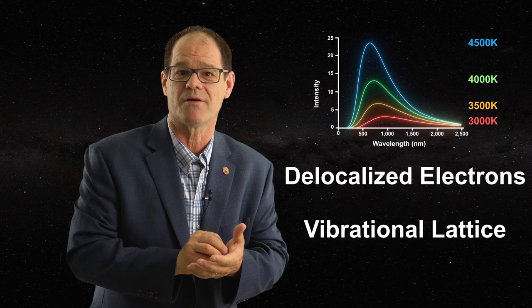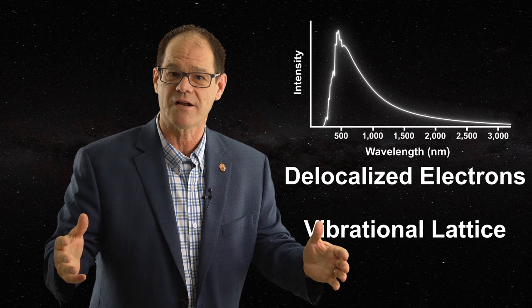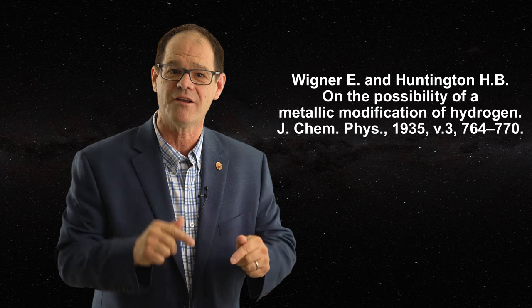This is the central reason why the photosphere of the Sun must be condensed matter. To produce the white light of the solar spectrum, we need delocalized electrons and we need a vibrational lattice. But the Sun is mostly hydrogen, which is usually a gas at high temperatures — so how can the Sun have a lattice like graphite? The answer has actually existed since 1935, when Wigner and Huntington proposed that elevated pressures can be used to produce metallic hydrogen.